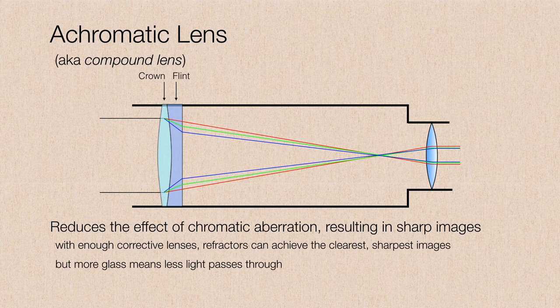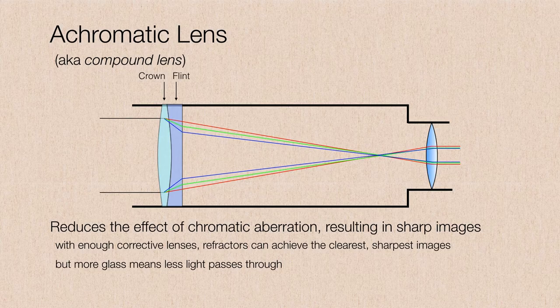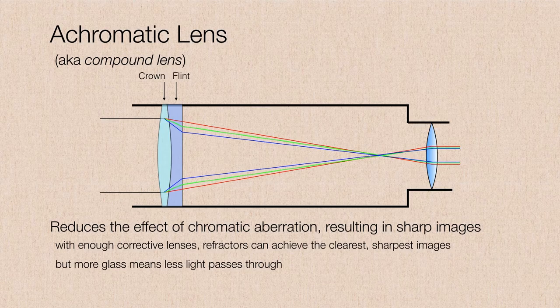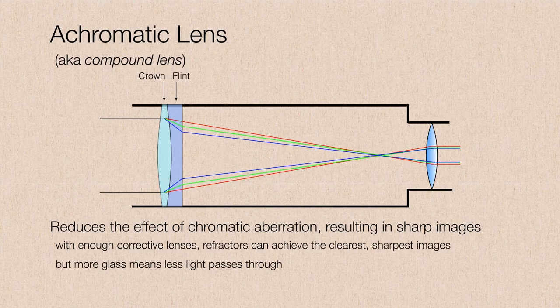However, we are employing more glass to produce the image. And every time you let light pass through some glass, you're going to lose a few photons here and there. So depending upon your application, you may or may not want to lose those extra photons. Still, you can get the sharpest images this way.